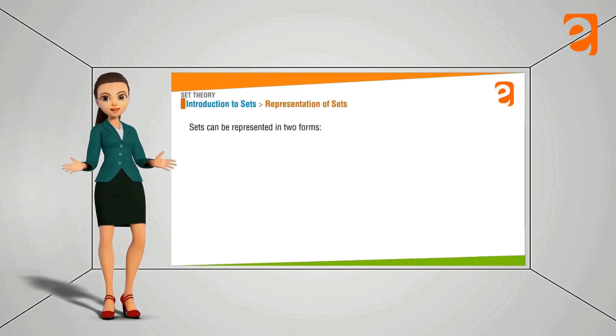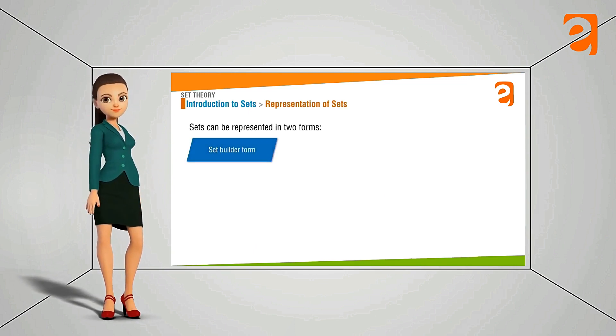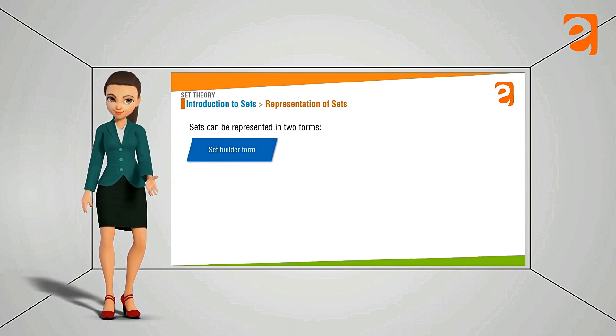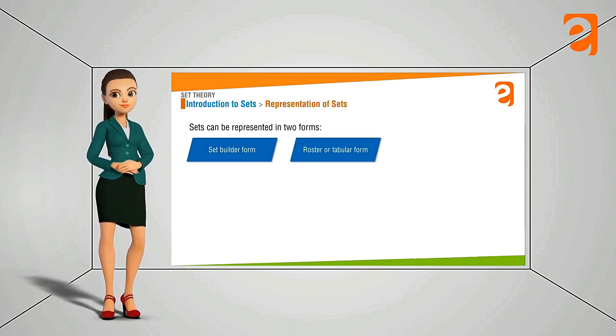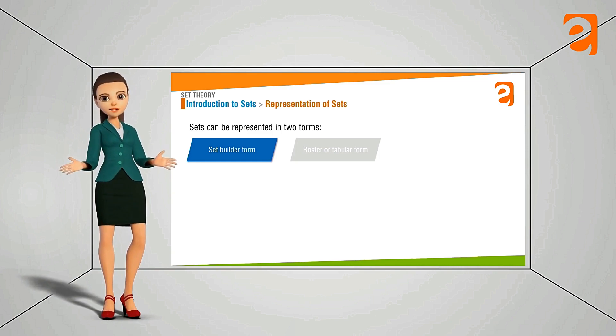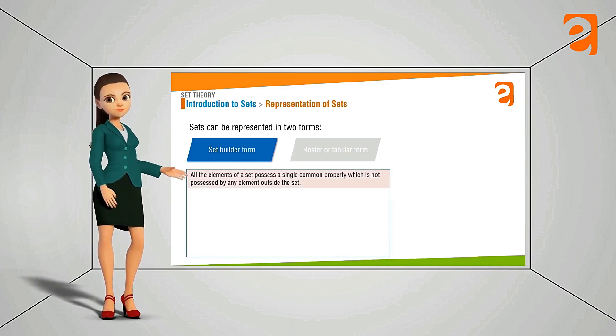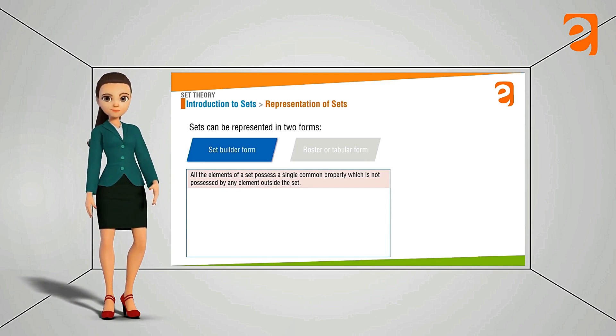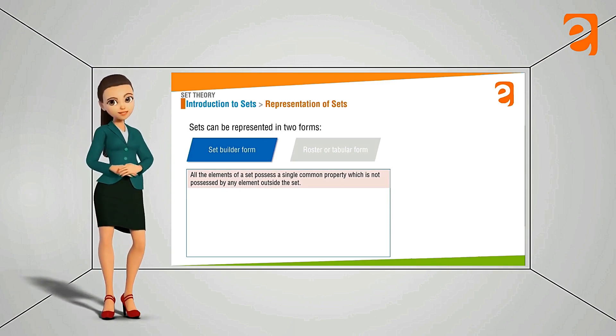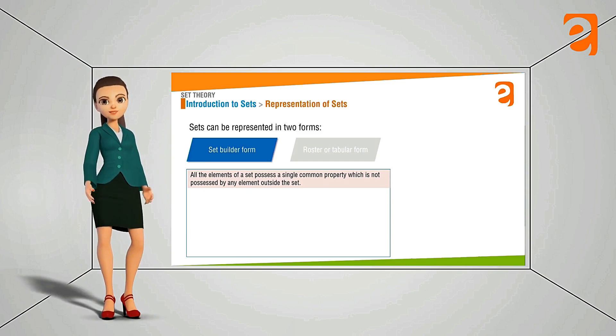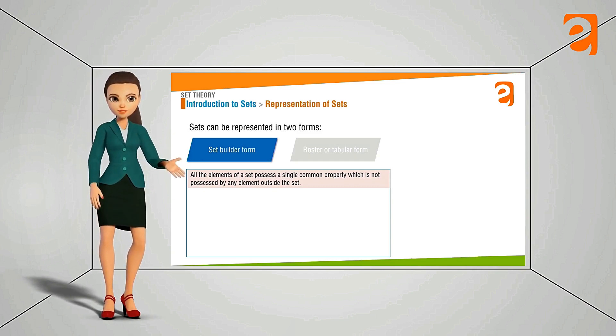Now let's see how we are going to represent the set. Set is usually represented in two forms. First is set builder form. Other is the roster or tabular form. So let's define the set builder form. What is set builder form? In this case all the elements of the set possess a common single property which is not possessed by any element outside the set.